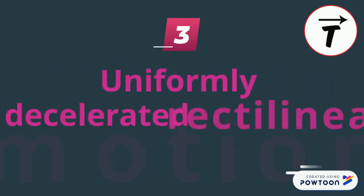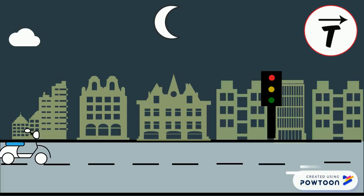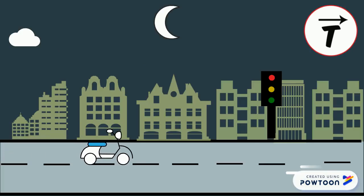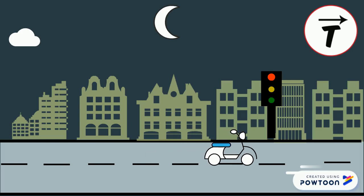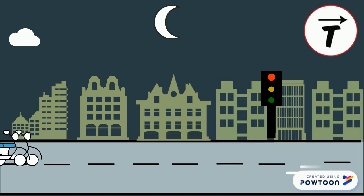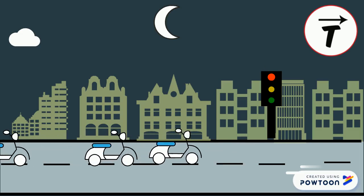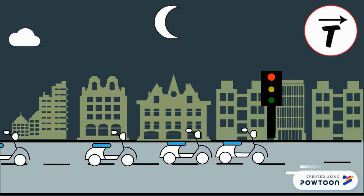Third, uniformly decelerated motion. The driver, initially moving at 12 meters per second, spots a red light turning on and applies the brakes to stop the scooter. The speed of the scooter decreases from 12 meters per second to 0 meters per second — we say that the scooter decelerates. During the deceleration phase, the speed decreases and the scooter covers less distances during equal time intervals.